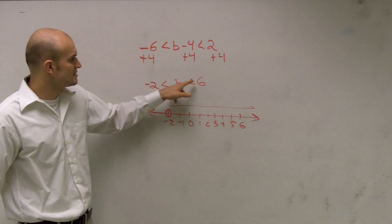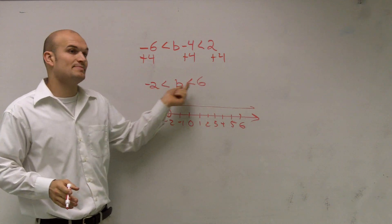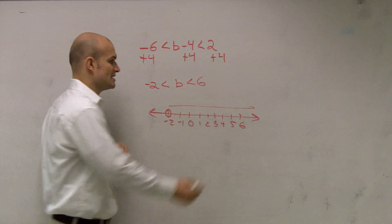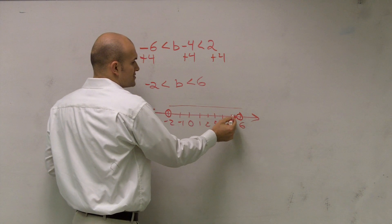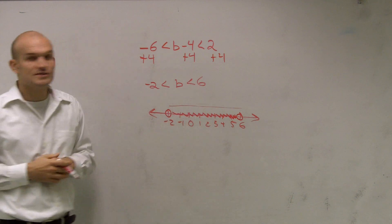And then this one says b is less than 6. So it says b has to be greater than negative 2, but it also has to be less than 6. So it's going to be all the values in between negative 2 and 6.